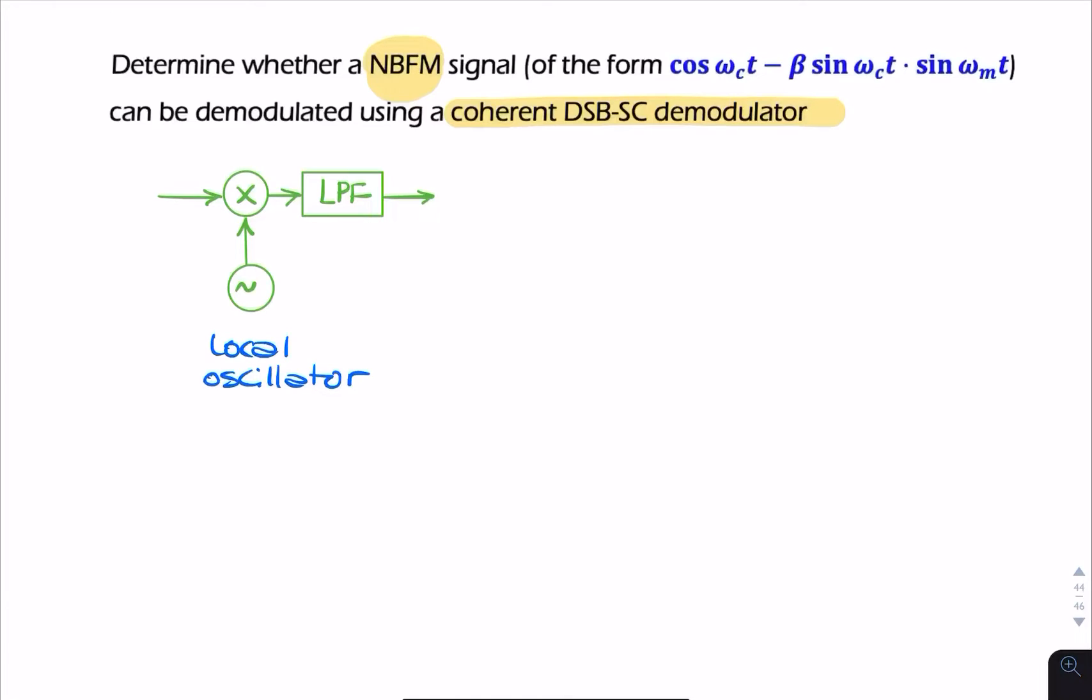But if you look at this form of FM, narrowband FM can be written in this form, which looks a little bit like AM, where you have a carrier term and you have your sideband terms. So because of the similarity, it's natural that the question should arise: can we use a coherent demodulator to demodulate narrowband FM?